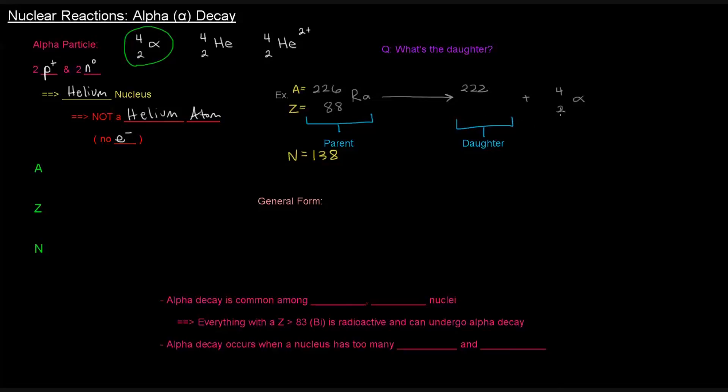I already have 2 down here for the atomic number, and I need it to be equal to 88, so I'll just put an 86 down here. Now, which element is this going to be? If you look on the periodic table, 86, you'll find Rn. That's radon. So that's it for this problem. This is the daughter that would show up after this alpha particle is emitted.